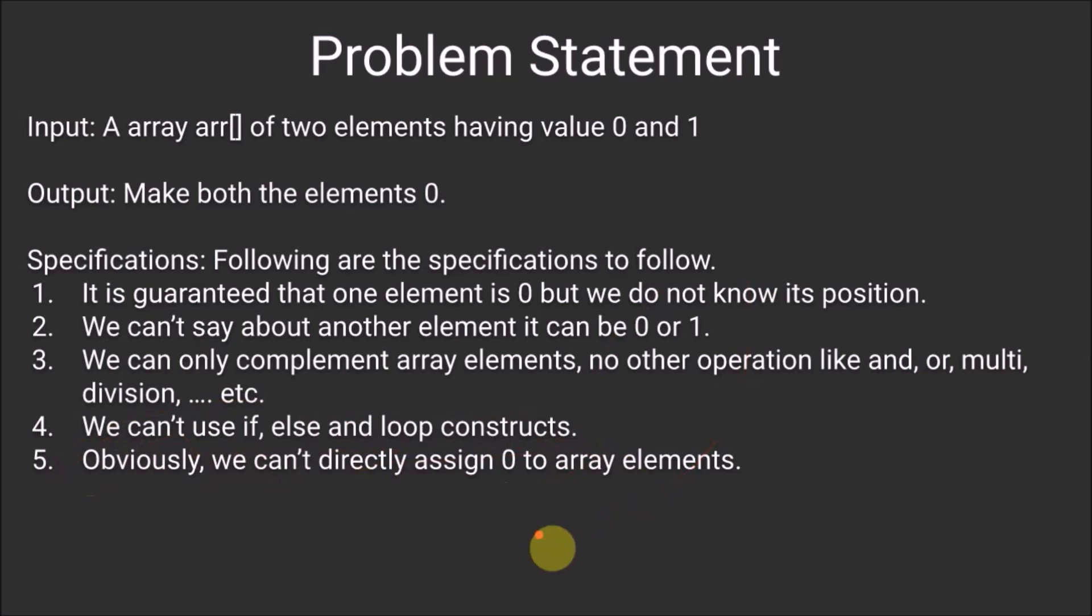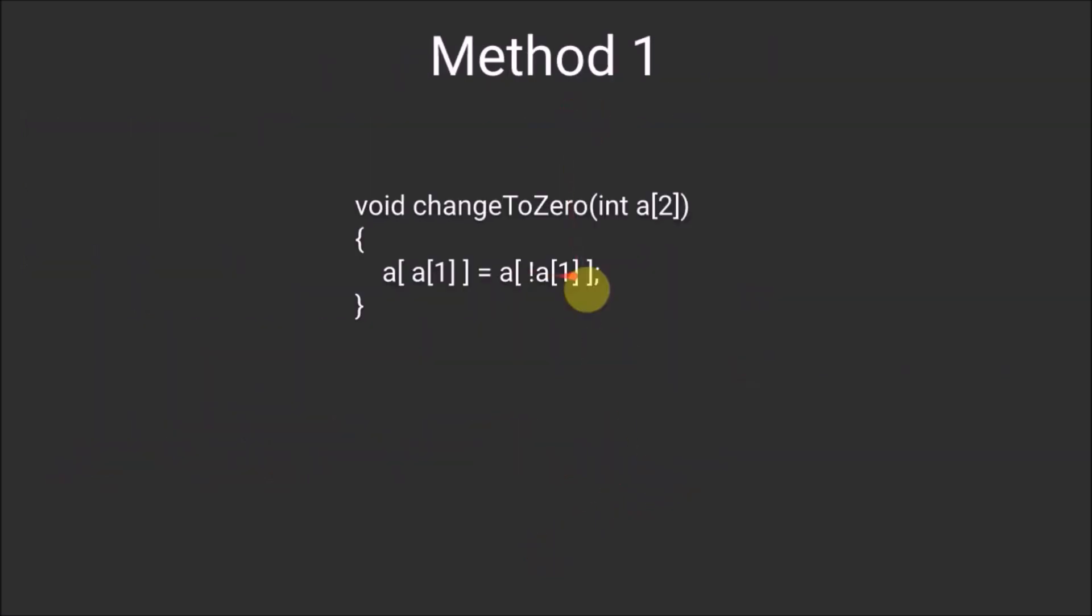Let us see how we can achieve this. Method 1: In this method, we have used bitwise NOT. We take the element at the first position of the array and complement it. The result will be either 0 or 1.